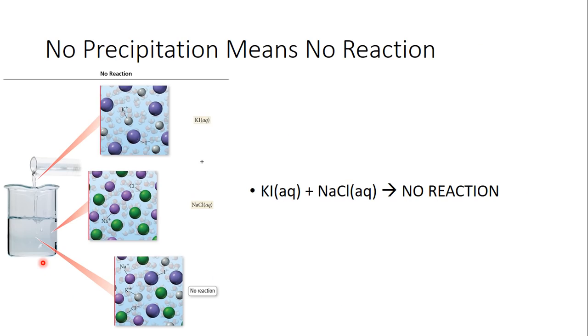Now, just because you mix two things together that are soluble to begin with does not always mean they'll form a solid. Sometimes they'll remain in solution as shown here with potassium iodide and sodium chloride and so you'll get no reaction.